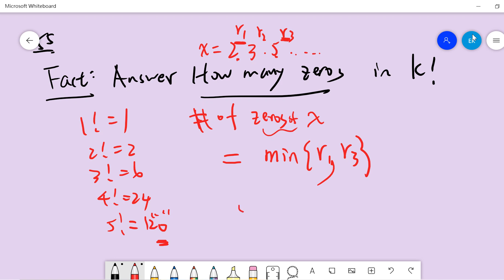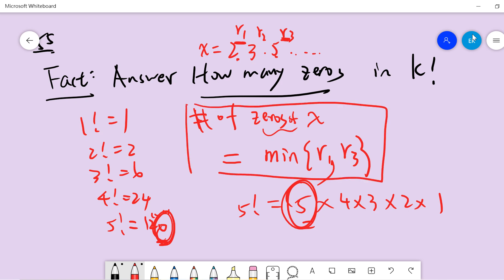In 5 factorial we have 5 times 4 times 3 times 2 times 1. We have only one five, so we have one zero. This is the important fact we need to use to find how many zeros in k factorial.